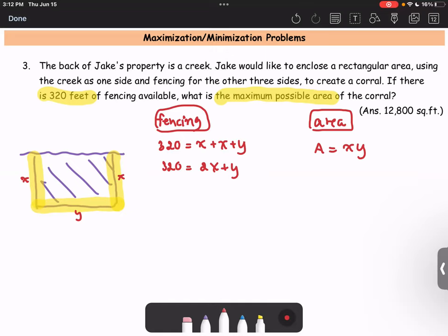From the fencing information, we have the two variables x and y in one expression. So let's solve for y. To write y in terms of x, we get y equals 320 minus 2x.